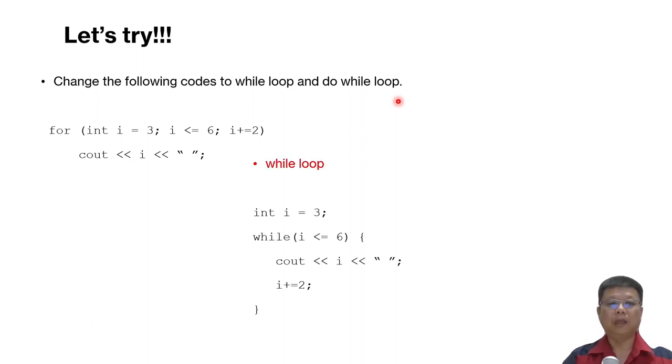Let's check the answer. So this is the while loop. Please compare your answer. We have initializations i equal to 3, in integer i equal to 3, before the line of while. And then for change to while, maintain the condition. And in the part cout, we maintained. But the incrementals, we put it just a line before closing the while loop.